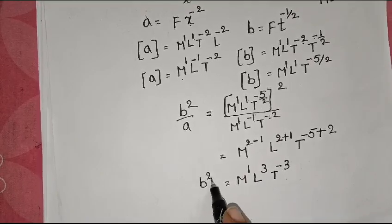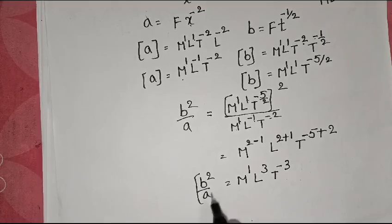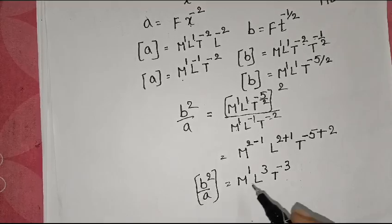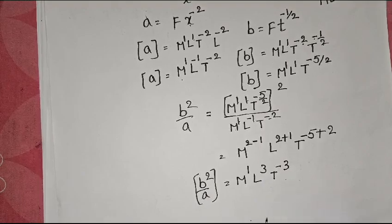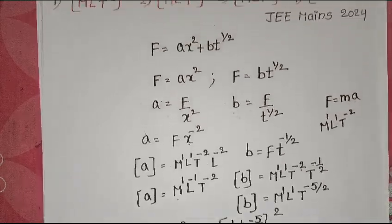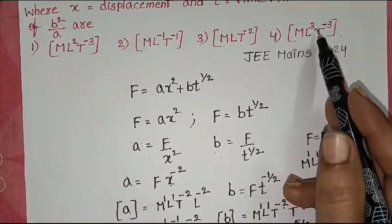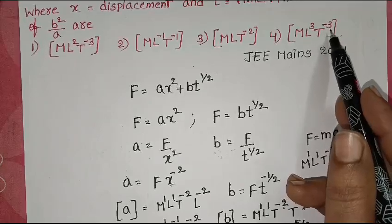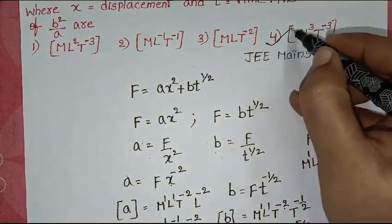Therefore, dimensions of B² by A equals M¹L³T⁻³. Checking the given options: M¹L³T⁻³ corresponds to the fourth option, which is correct.